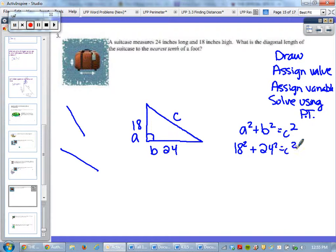18 squared is 324, and then 24 squared is 576. I'm going to add these two together, I'm going to get 900. Then we're just going to find the square root of both of these. The square root of 900 is 30, so we know that 30 is the diagonal.